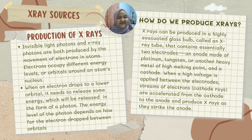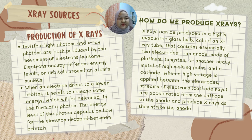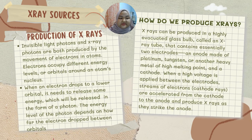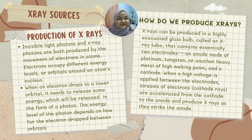So how is X-ray produced? Visible light photons and X-ray photons are both produced by the movement of electrons in atoms. Electrons occupy different energy levels or orbitals around an atom's nucleus. When an electron drops to a lower orbital, it needs to release some energy, which will be released in the form of a photon. The energy level of the photon depends on how far the electron dropped between orbitals.